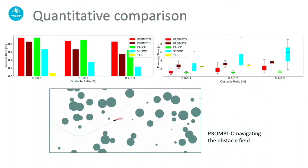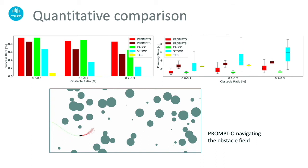We perform a large set of quantitative tests on a randomized obstacle field with varying obstacle sizes. The results show that PROMPTO outperforms PROMPTS consistently due to a better sampling strategy. Both outperform state-of-the-art trajectory optimization planners like STOMP and TEM. PROMPTO matches the performance of state-of-the-art lattice planners like FALCO, both in terms of success rates and computational time for lower obstacle densities.